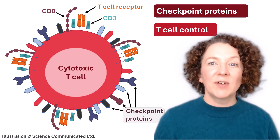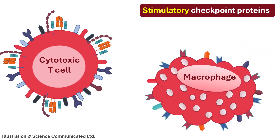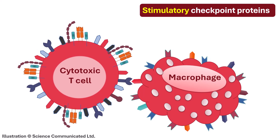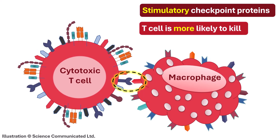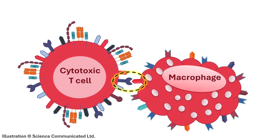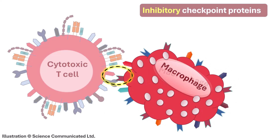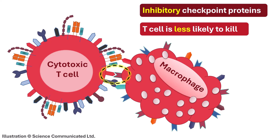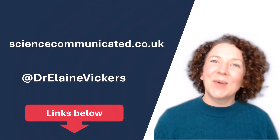That's why our T cells have checkpoint proteins, so that our body has a way to control which T cells are activated and for how long. Some checkpoint proteins are stimulatory. When they connect with their partner protein on another cell, the T cell becomes more active and more likely to kill cells in its vicinity. Others are inhibitory. If an inhibitory checkpoint protein connects with its partner, then the T cell becomes less active and it might even die.